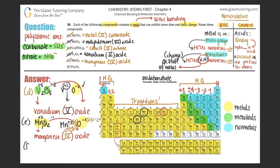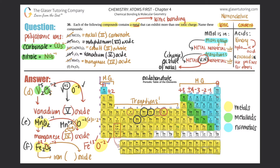Last, Example F is Fe₂O₃. Fe is iron, a transition metal, so we need iron, a Roman numeral, and oxide. Crisscrossing: the 2 tells me oxygen was −2, and the 3 tells me iron was +3. Checking the negative: oxygen being −2 makes sense. So iron is confirmed +3. The answer is iron(III) oxide.